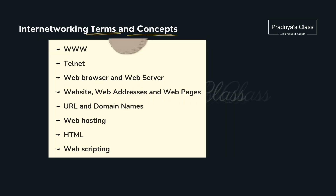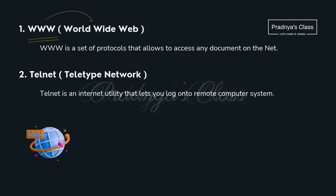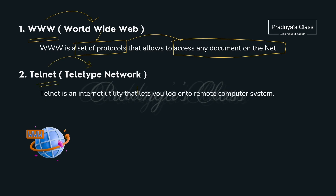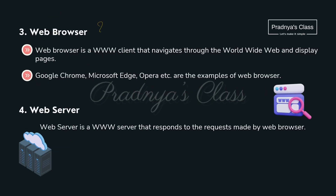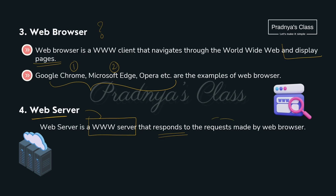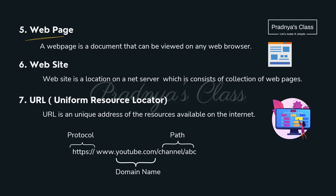Now let's discuss some terms and concepts related to internetworking. The first is WWW, World Wide Web — a set of protocols we follow to access any document on the internet. The second is Telnet, Teletype Network, which lets you log in to a remote computer system. A web browser is used to display web pages — examples include Google Chrome and Microsoft Edge. A web server is a WWW server that gives a response to requests made by the browser. A web page is a document on the internet, and a website is a collection of web pages, just like a book is a collection of pages.